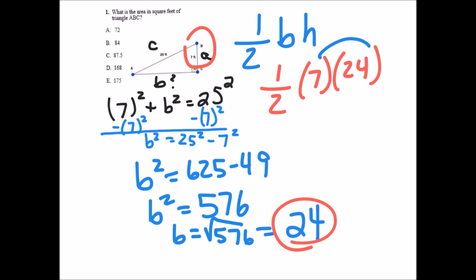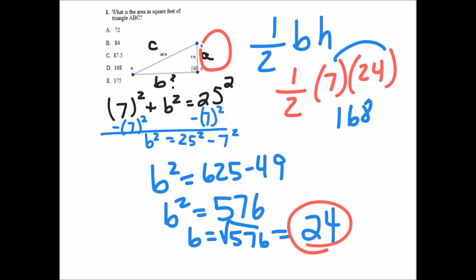You multiply these first in your calculator, 7 times 24 is 168, and then divide that by 2, and you get 84 squared. The correct answer is B.